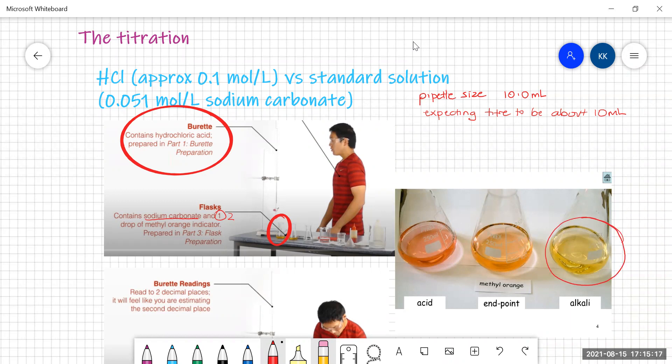What you're looking for, your end point of the titration, you're looking for that peachy colour that's in between pink and yellow. So that's the colour that you are looking for in your flask and when you see that colour that is when you're going to turn your burette off.